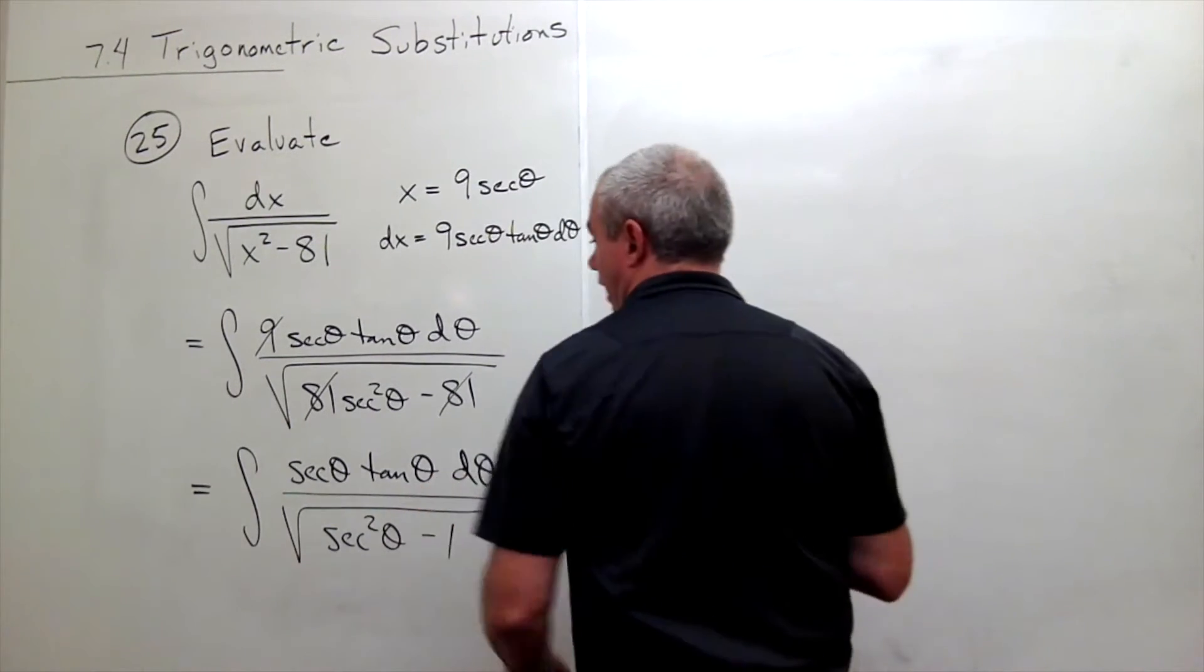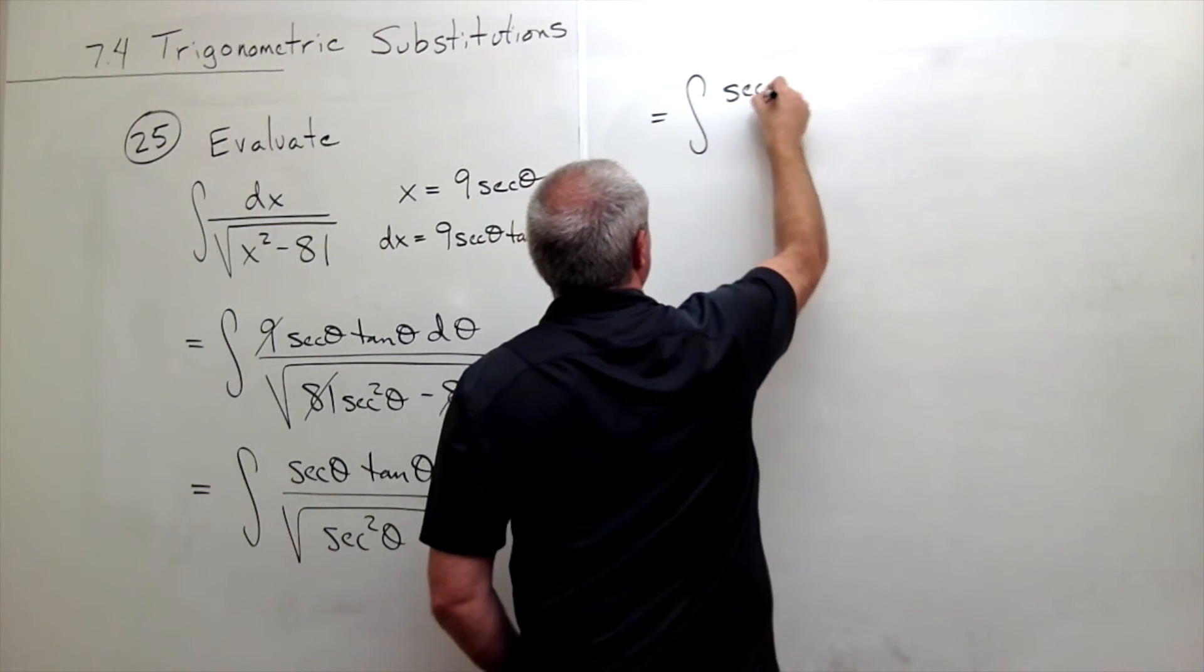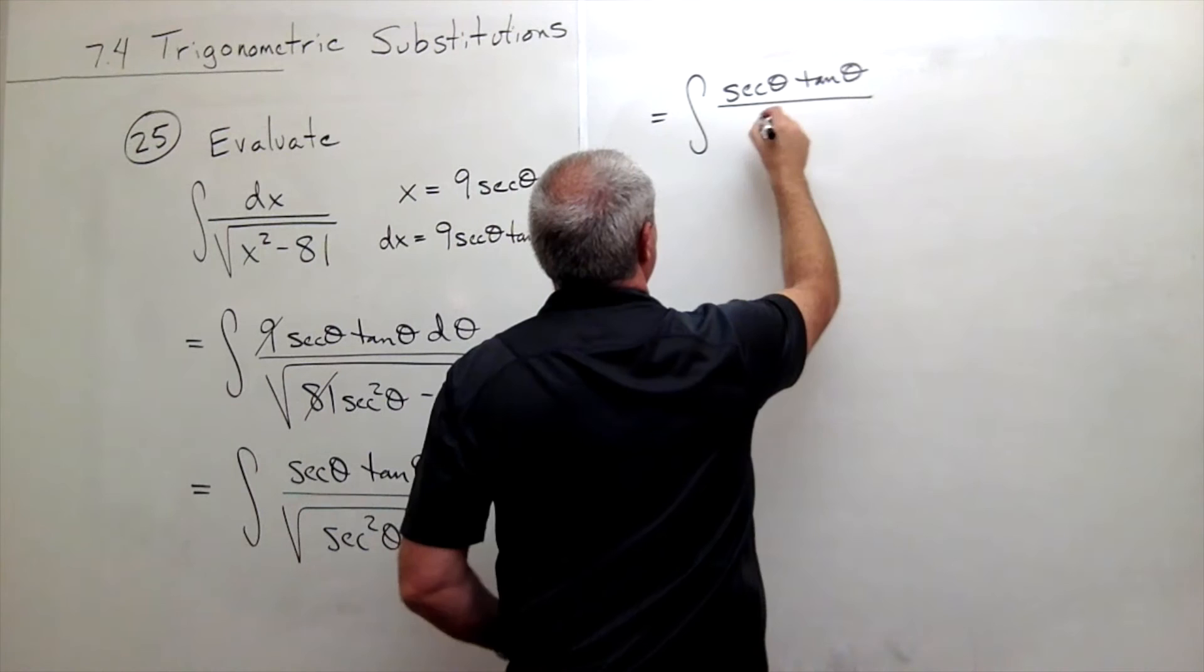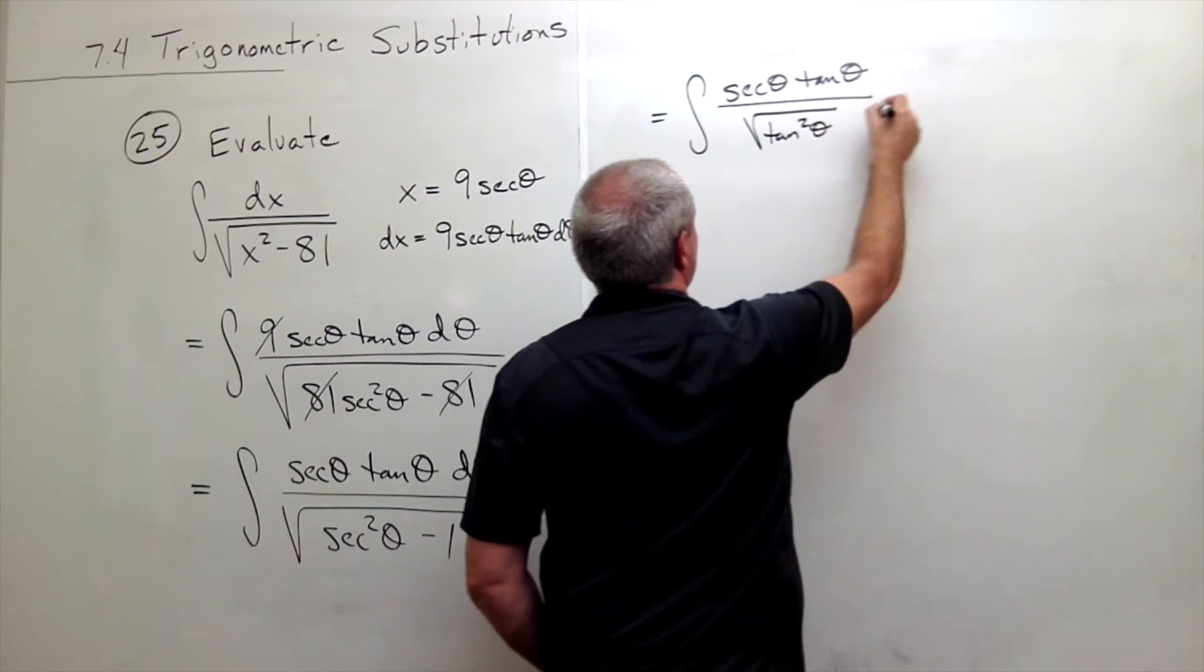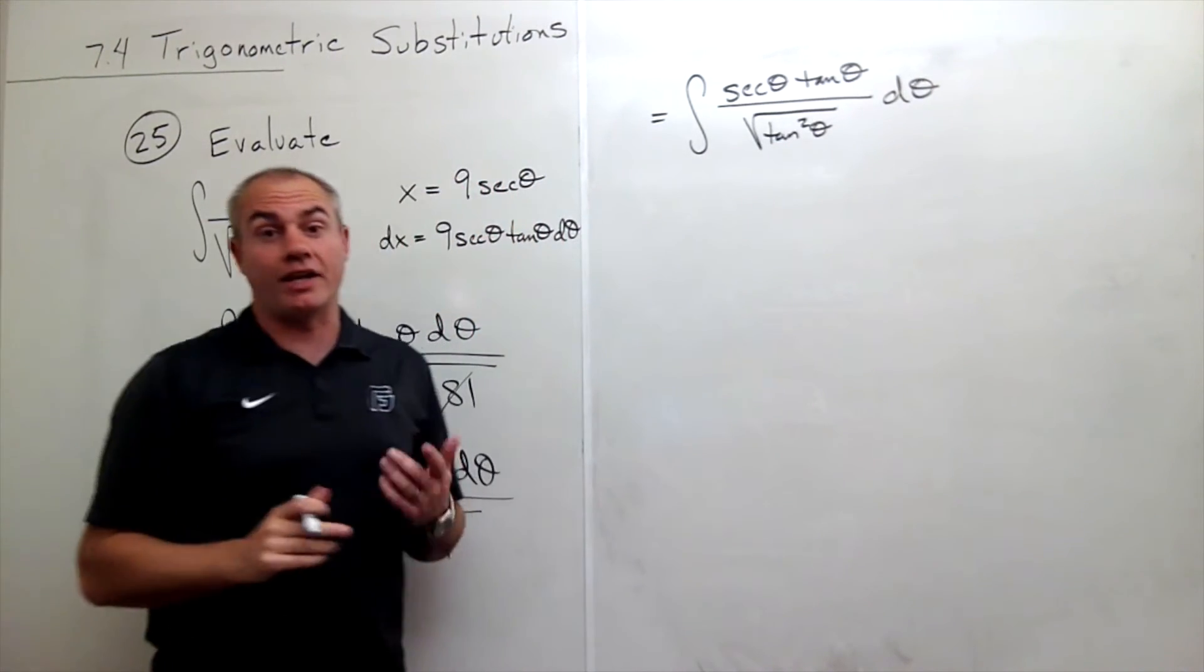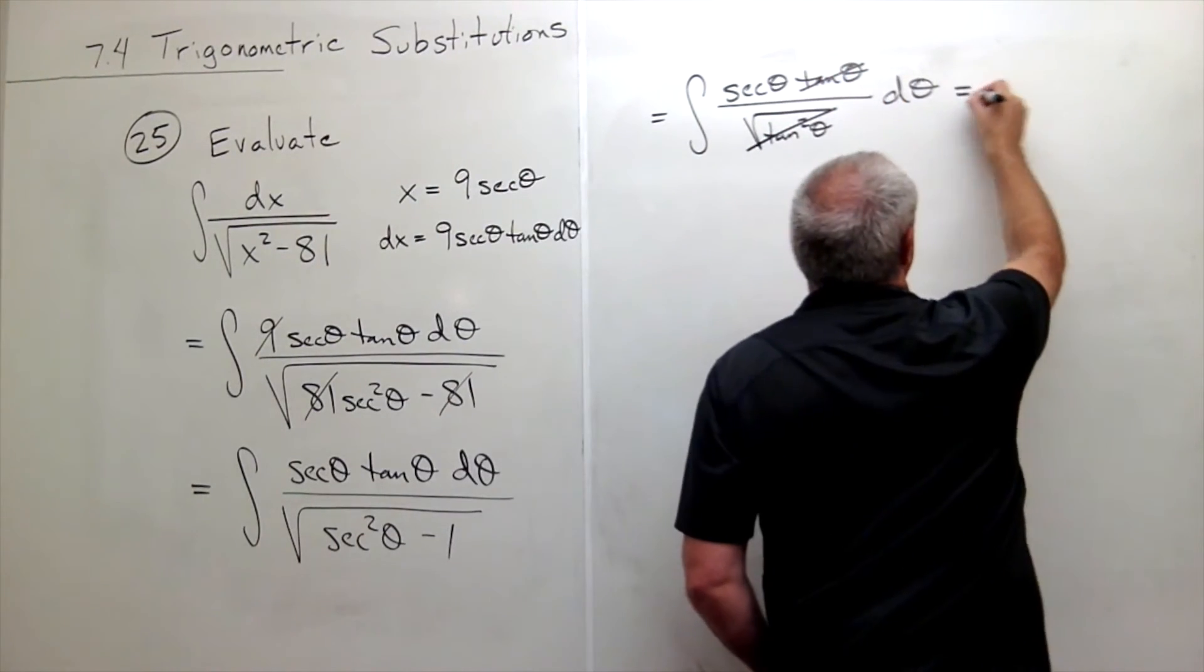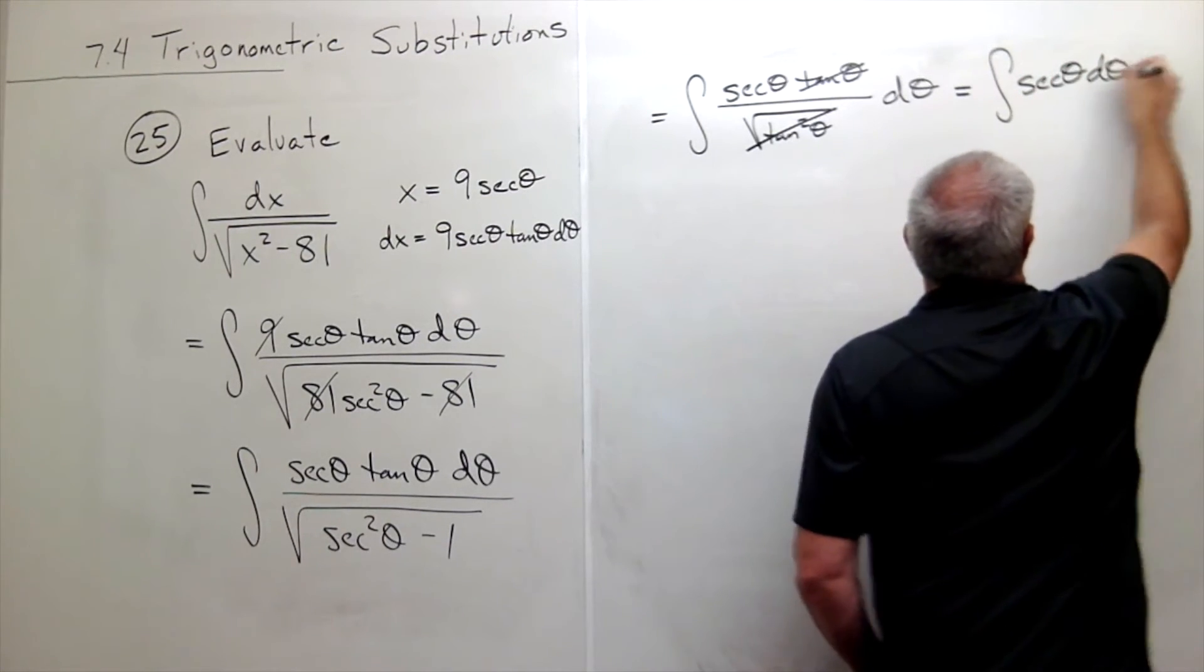This equals the integral of secant theta tangent theta divided by the square root of tangent squared theta d theta. The square root of tangent squared theta is tangent theta, so these cancel, leaving the integral of secant theta d theta.